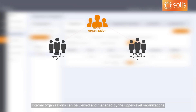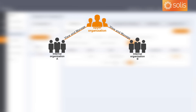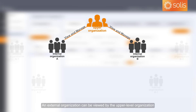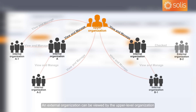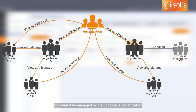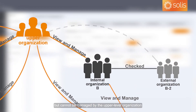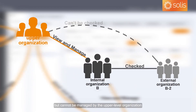Internal organizations can be viewed and managed by the upper-level organizations. An external organization can be viewed by the upper-level organization, but cannot be managed by it. An external organization cannot be viewed by the cross-level organization.